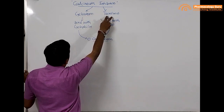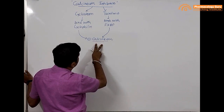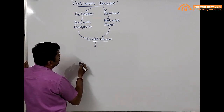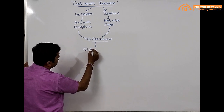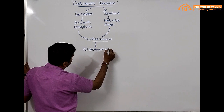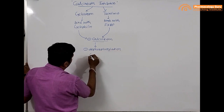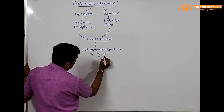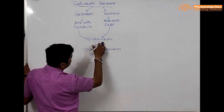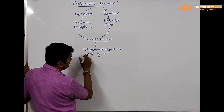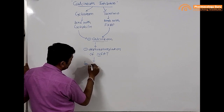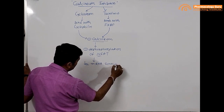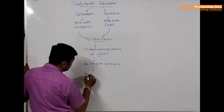So both cyclosporine and tacrolimus inhibit calcineurin. Once calcineurin is inhibited, it causes inhibition of the dephosphorylation of NFAT — the Nuclear Factor of Activated T cells. This inhibition of NFAT dephosphorylation leads to a decrease in the mRNA synthesis of interleukin-2.